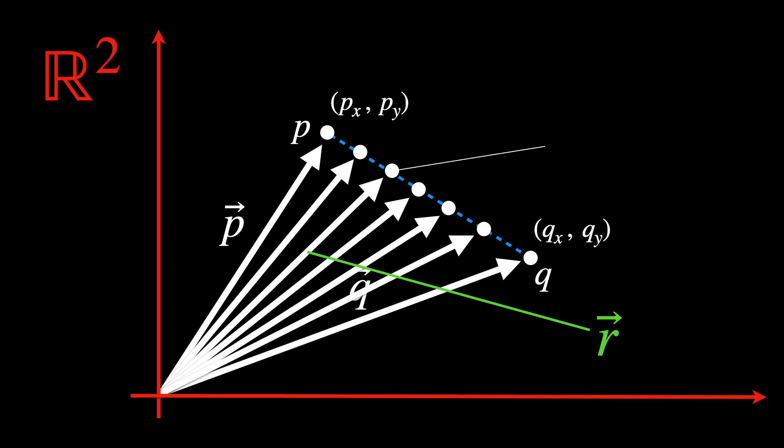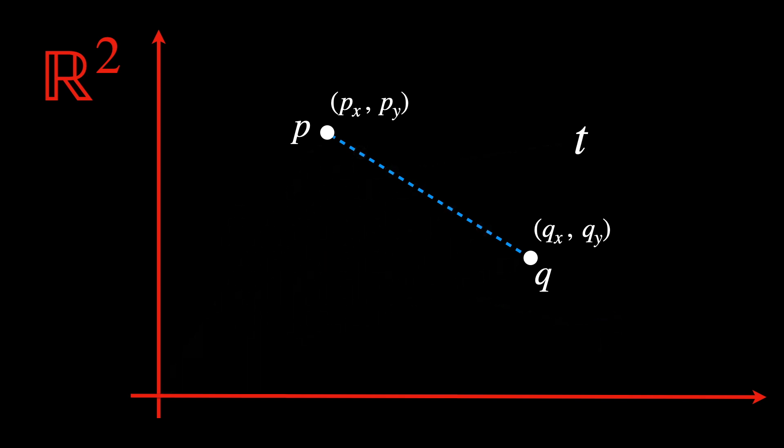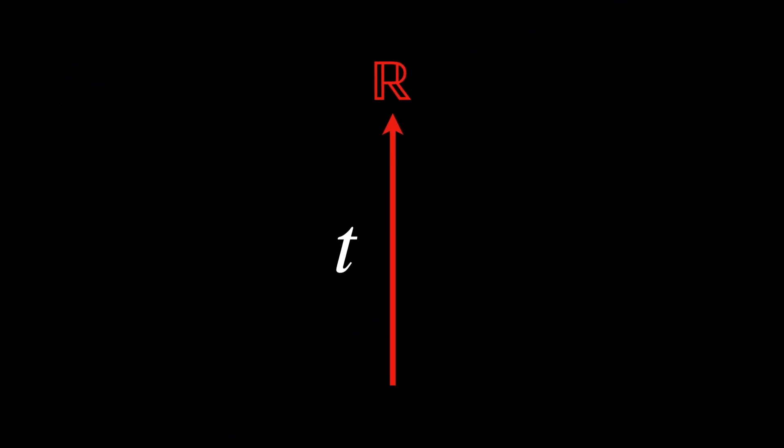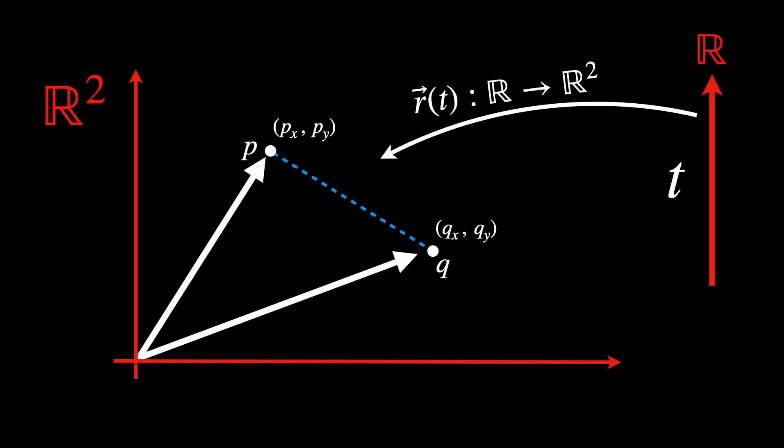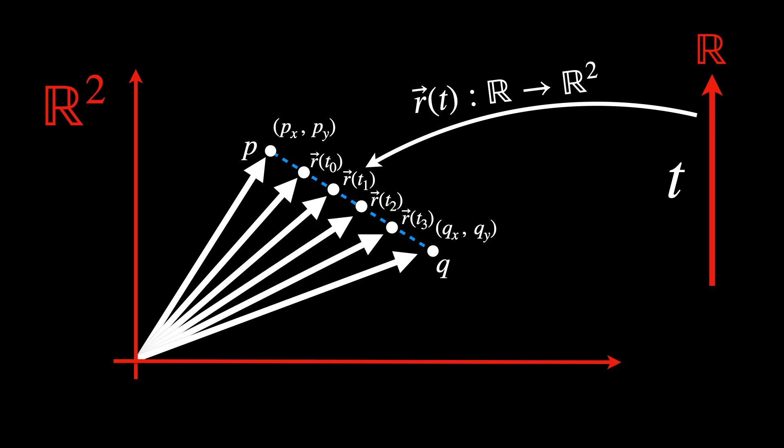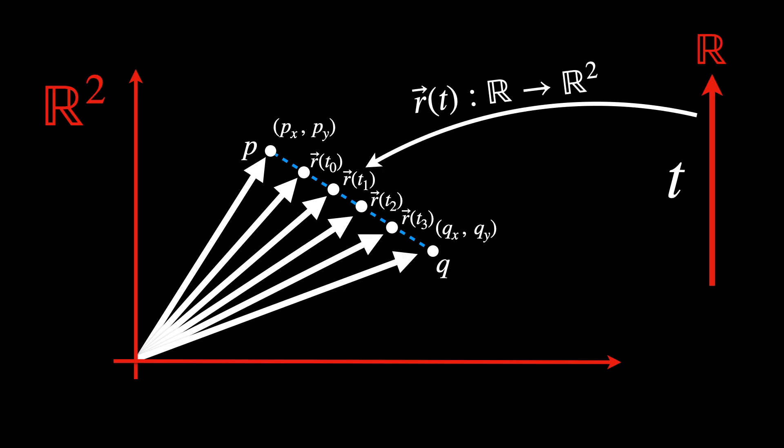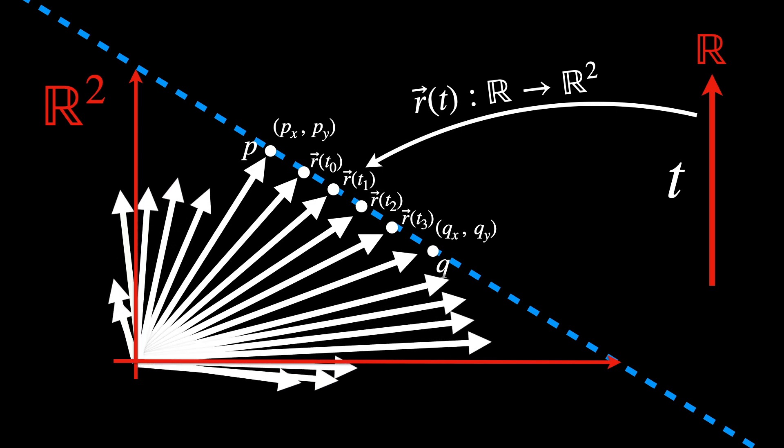This single variable is usually t, which we can describe as time. t exists in another one-dimensional Euclidean space. We parametrize it to the Euclidean space through this mapping. Parametrization provides a systematic way to navigate along the line. But, just putting it this way means we have described the infinite line. We didn't put an interval to it.